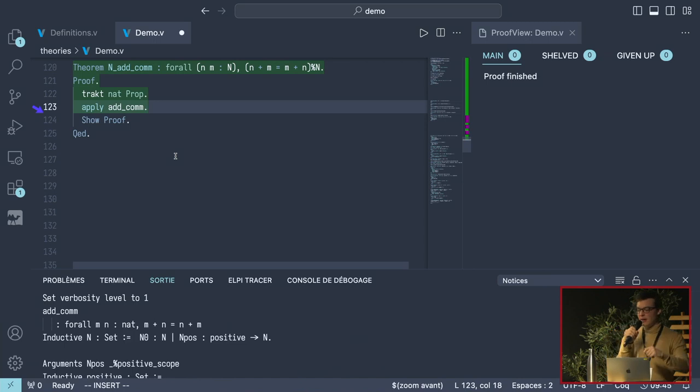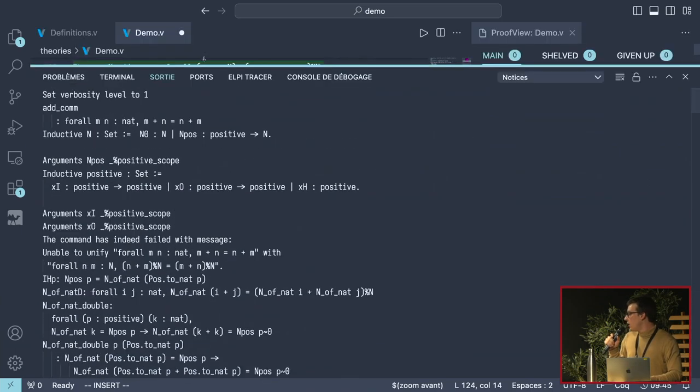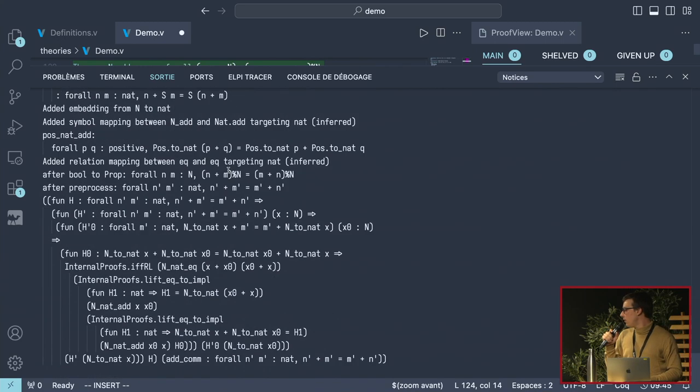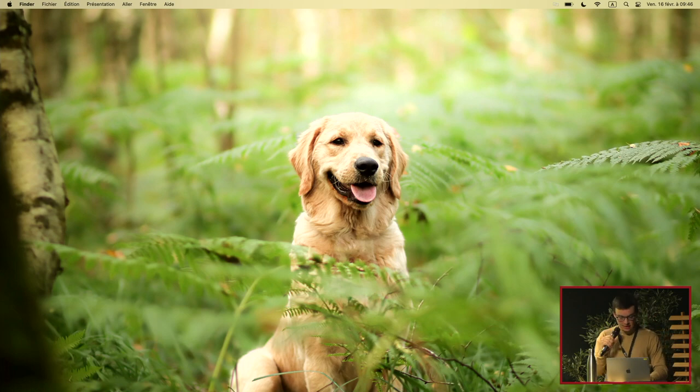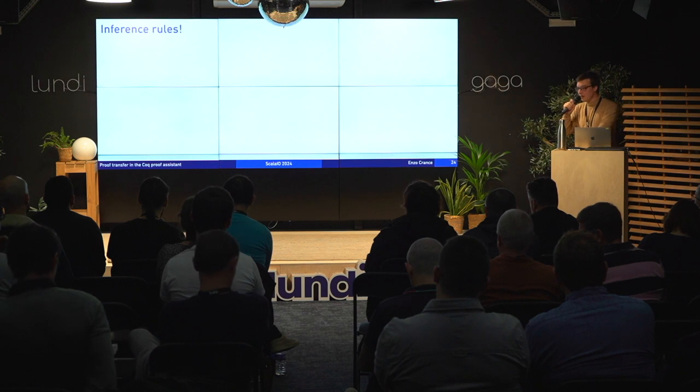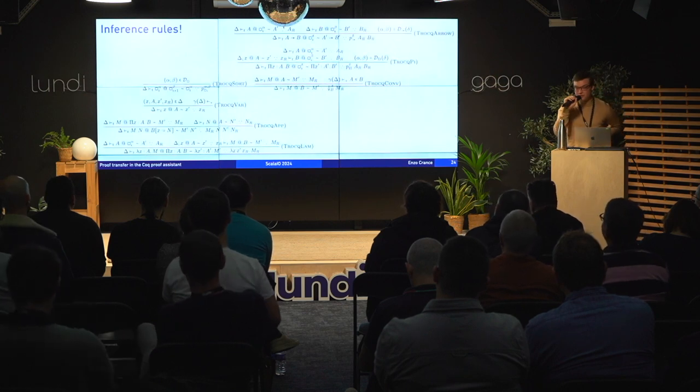Now that all this information is added we can try to prove our theorem on N by just running TRACT first. You see the goal has changed because the TRACT tactic actually built a proof term explaining to the Coq proof assistant that if I can prove the property on NAT then it implies the property on N. And now we can apply our add_comm theorem and it works. I want to stress here that it's not just like traversing the AST of the goal and changing all the NAT or N to the other one. In a proof assistant you must justify everything. You generate the output goal but also a proof term at the same time.